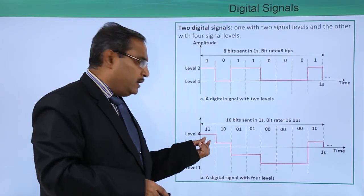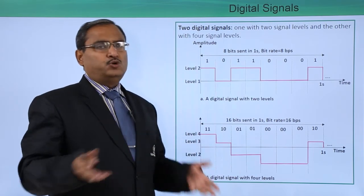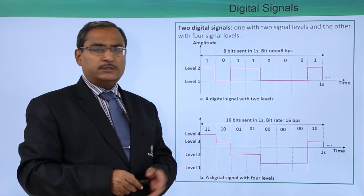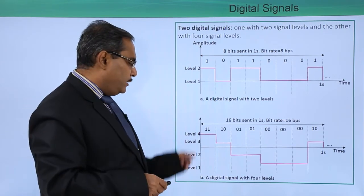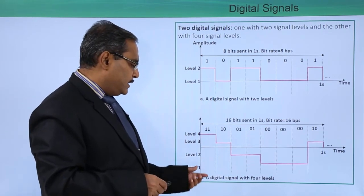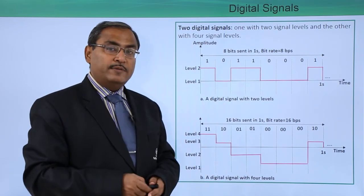In this way, as we are clubbing or grouping 2 bits - 2 bits can have how many combinations? 4 combinations. Accordingly, we will be having 4 different levels. That is a digital signal with 4 levels.